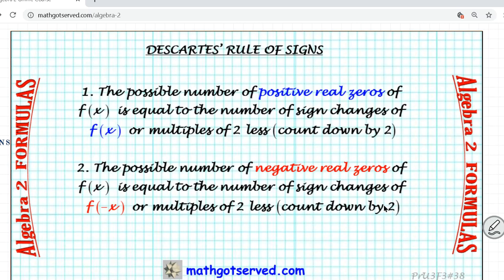Descartes' rule of signs basically helps us to determine the possible number of positive and negative zeros of any polynomial function. For positive: the possible number of positive real zeros of a function f(x) is equal to the number of sign changes of f(x), or multiples of two less — counting down by two. If your result is even, count down by even numbers; if odd, count down by odd numbers.